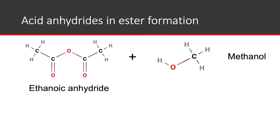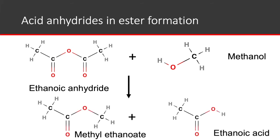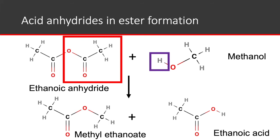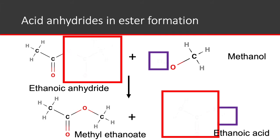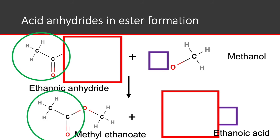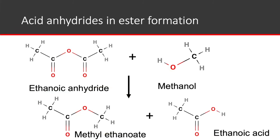So, acid anhydrides in ester formation. We take our ethanoic anhydride and react it with methanol. We are aiming to make methyl ethanoate, but instead of making water we will make ethanoic acid instead. To make the ethanoic acid, we take the ethanoate part from the ethanoic anhydride — shown in the red box — and combine it with the H in methanol, and that gives us ethanoic acid. For the methyl ethanoate, the atoms circled in green make up the first part of the ethanoate group, and the last part comes from methanol — and that's how we make our ester.